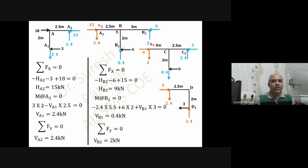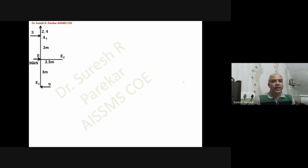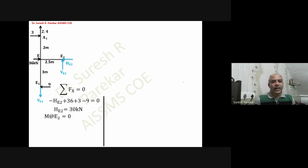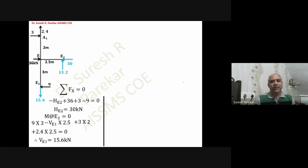For the second floor, the known values from the first floor carry over: 3 to the left and 2.4 downward become 3 to the right and 2.4 upward at joint E. Summation Fx equal to zero gives HE2 equal to 30 kilonewtons. Taking moment about E2: 9 into 3 minus VE1 into 2.5 plus 3 into 2 plus 2.4 into 2.5 equals zero, giving VE1 equal to 15.6 kilonewtons. Summation Fy gives VE2 equal to 13.2 kilonewtons.